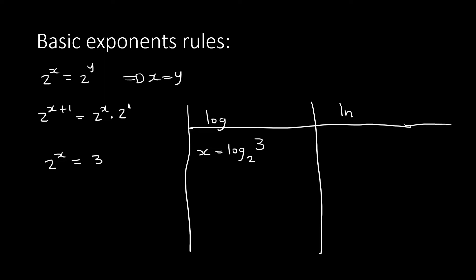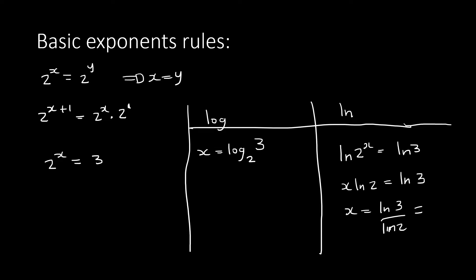With ln: if I have 2^x = 3, apply natural log to both sides. The x comes in front, giving x·ln2 = ln3. Divide both sides by ln2 and put it in the calculator — you get 1.584. And log base 2 of 3 is also 1.584, so you can see it's the same thing.